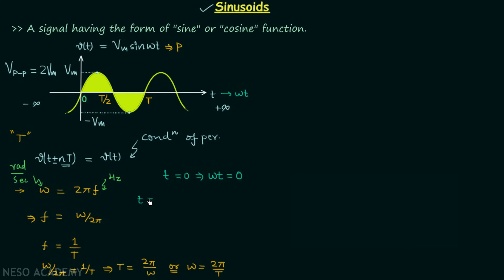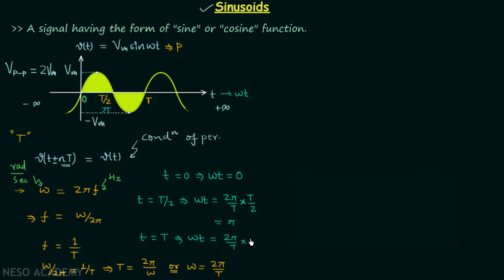When t is equal to T/2, the corresponding value of ωt will be (2π/T)·(T/2), which gives ωt equal to π. So in place of T/2 we will have π. When t equals capital T, the corresponding value of ωt equals (2π/T)·T, which gives 2π. So in place of T we will have 2π, and similarly all other values will change.